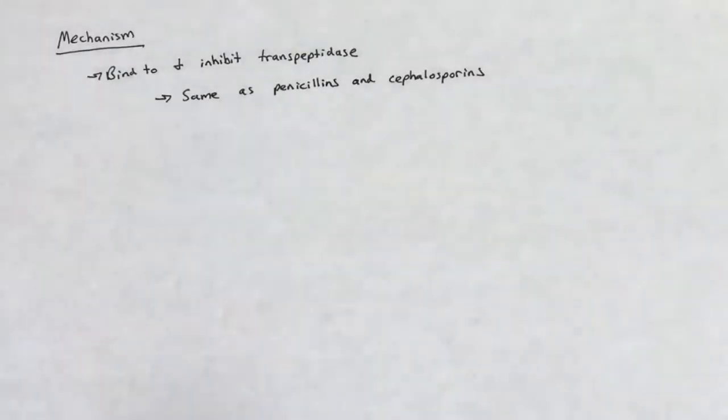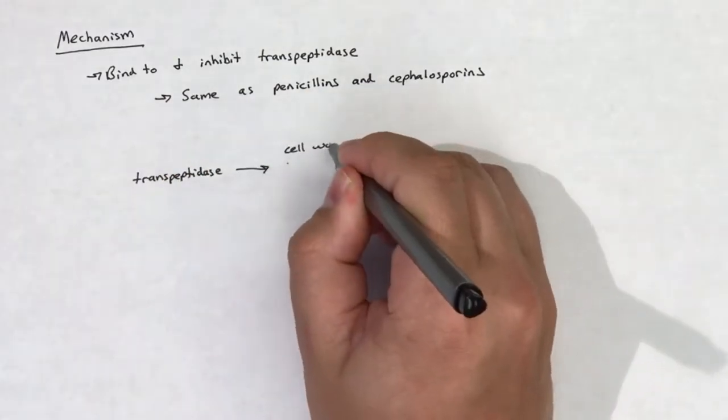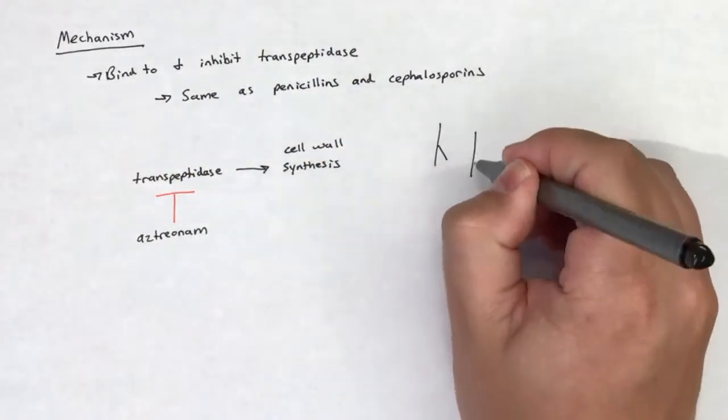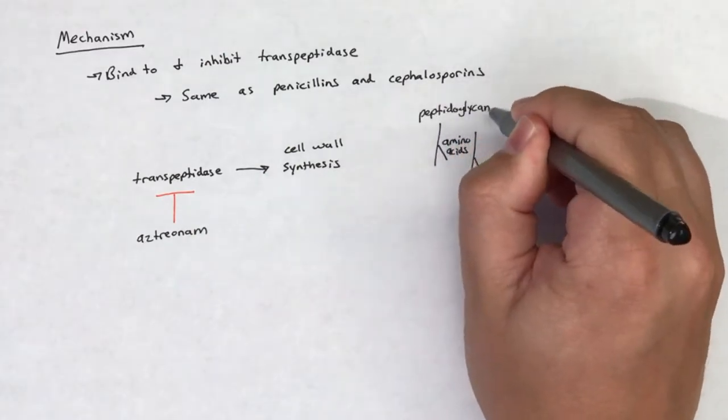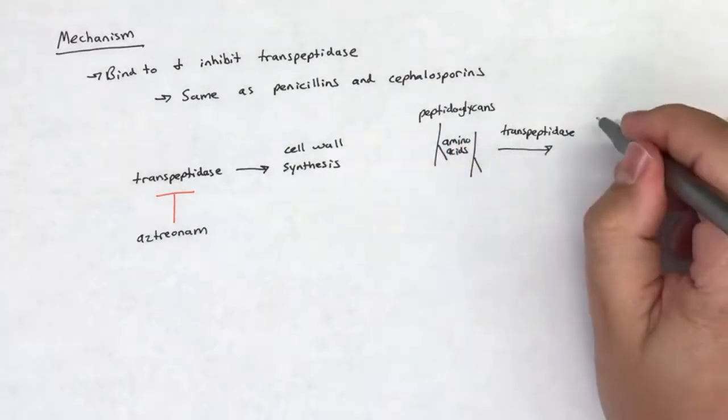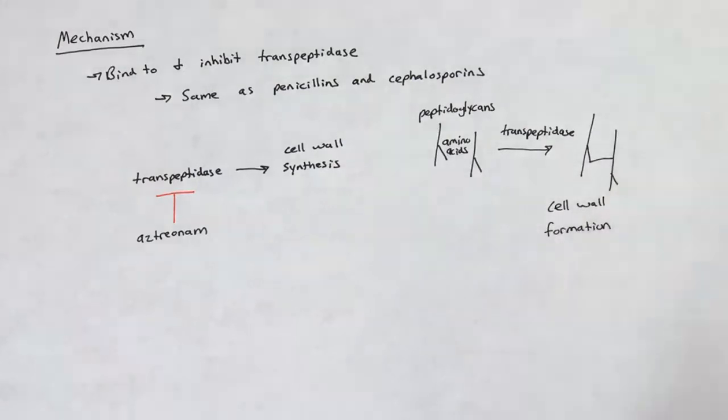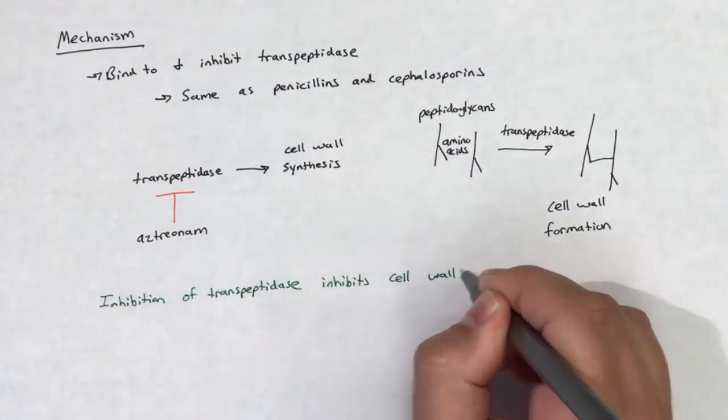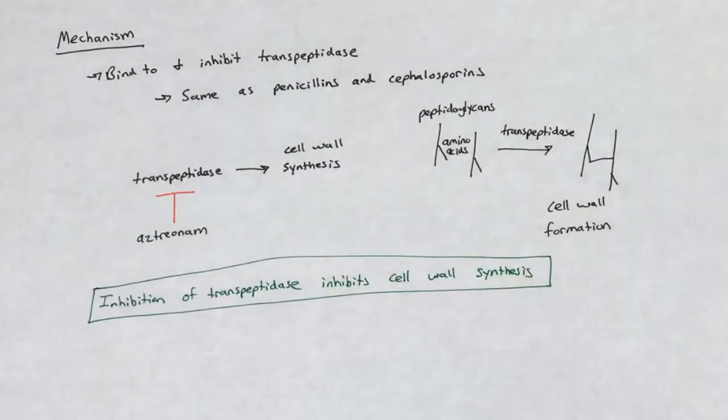Aztreonam specifically binds to and inhibits the gram-negative-specific subtype of the enzyme transpeptidase. Transpeptidase is an essential enzyme in the cross-linking of the bacterial cell wall. Without a functional transpeptidase enzyme, the bacterial cell wall loses its rigidity, and proliferating bacteria will die. Aztreonam is bactericidal.